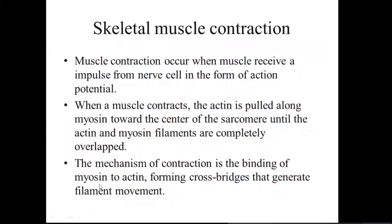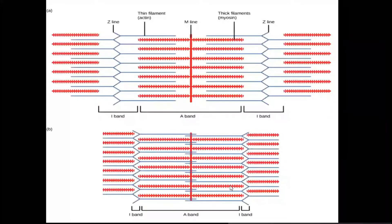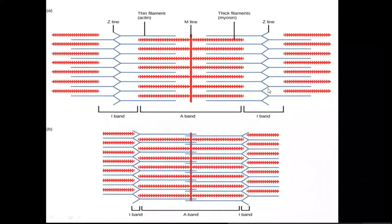The myosin head-like structure forms cross-bridges — a fine bond between myosin and actin. You can see in the diagram the sarcomere structure involved in muscle contraction. The sarcomere spans from one Z-line to another Z-line. The overlapping of thick filaments over thin filaments is what drives muscle contraction.